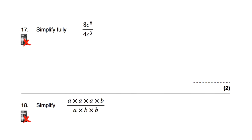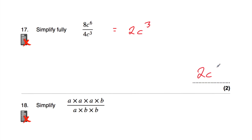Question number 17: simplify fully 8c⁶ divided by 4c³. 8 divided by 4 is 2. Then c⁶ divided by c³ — subtract the powers: 6 minus 3 is 3, so that's c³. The answer is 2c³.